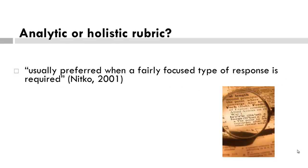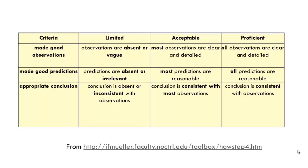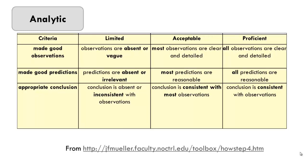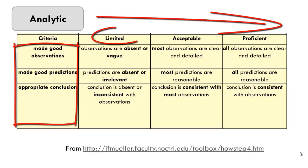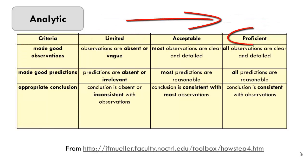What about when a fairly focused type of task is completed? Yes, analytic — because you might be able to isolate individual criteria. This rubric appears to be assessing a fairly focused task that is examining student observations, predictions, and conclusions. It is very specific to these three skills, and each criterion has a description along a continuum ranging from limited to proficient.